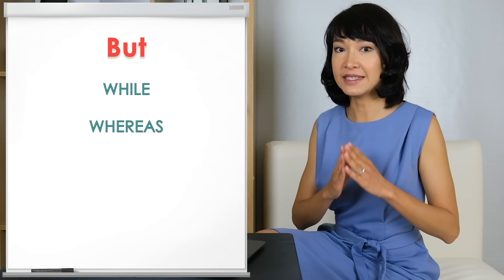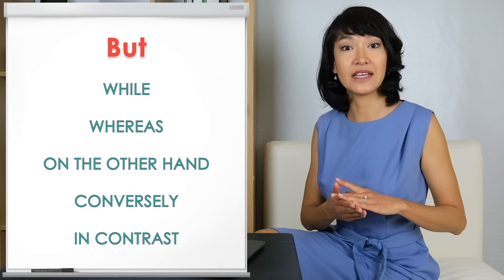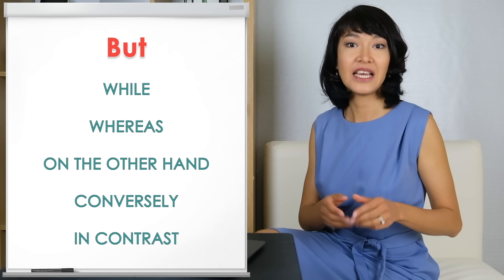Sometimes, however, we only want to make a simple contrast. Let's look at some ways to do that. We can use WHILE, WHEREAS, ON THE OTHER HAND, CONVERSELY, and IN CONTRAST. These linking words are very useful when we want to present two points of view at the very beginning of our essay.